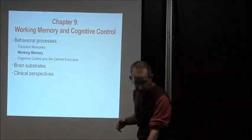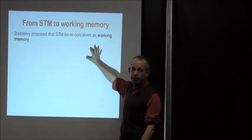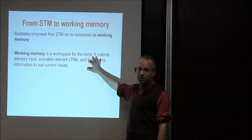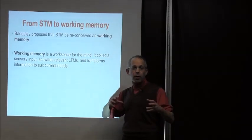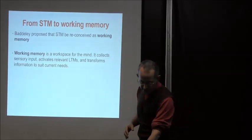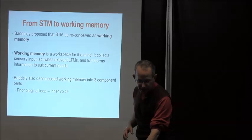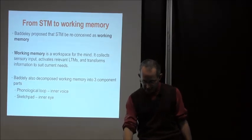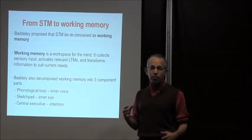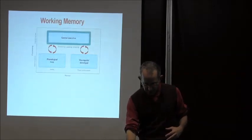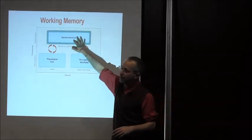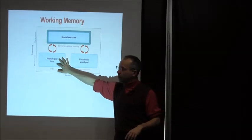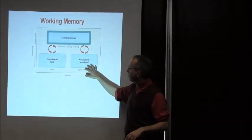Baddeley is the person who proposed reconceiving short-term memory as working memory. He described it as a workplace for the mind — like a blackboard — where we collect relevant information from sensory input, from relevant long-term memory, and transform it. He described it as having three components: a phonological loop, which we think of as our inner voice; a visuospatial sketchpad, like our inner eye; and a central executive, which is the control process or attention. The central executive monitors and reroutes information while interacting with an independent phonological loop and visuospatial sketchpad.